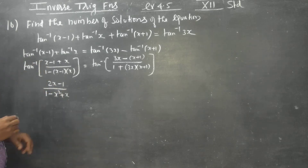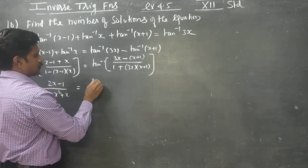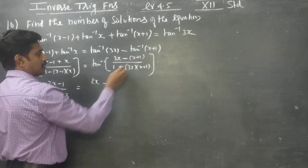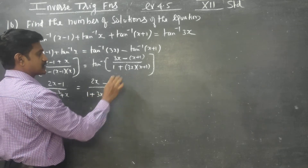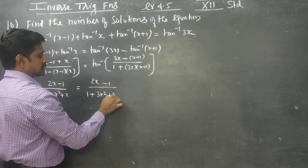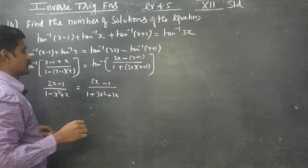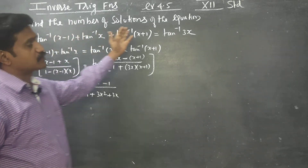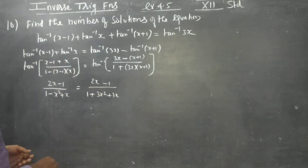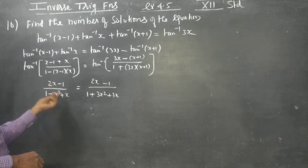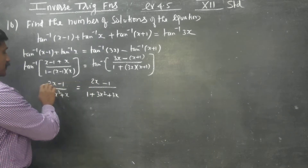Continuing the simplification: on the right-hand side, 3x minus x gives 2x minus 1 in the numerator, and the denominator involves 3x squared plus 3x terms. Canceling common terms to find the x values.